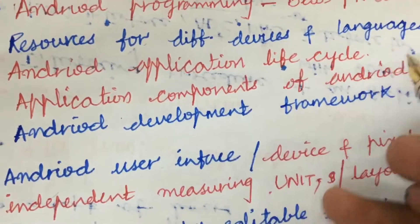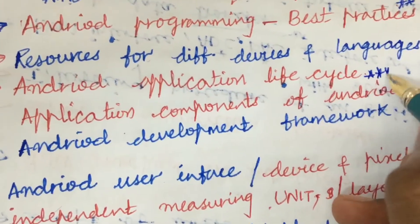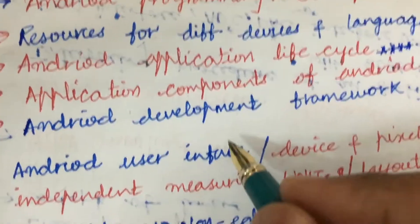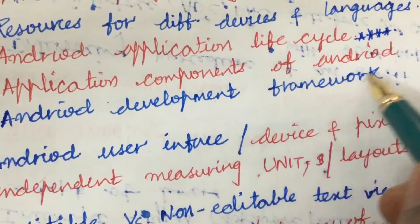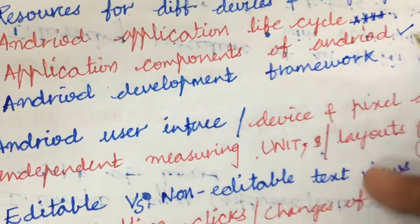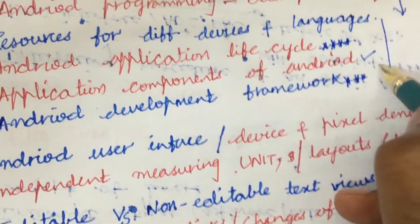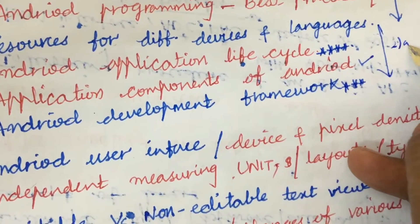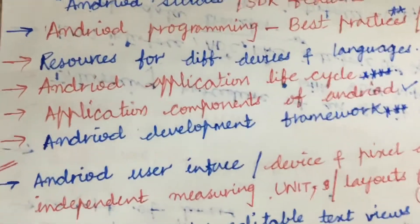Android application life cycle is also one of the gunshot questions we can expect in the second part. Later, application components of Android and the Android development framework may also be one of the gunshot questions. From this part we can expect the second question — 2A as well as 2B.